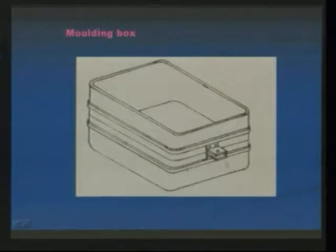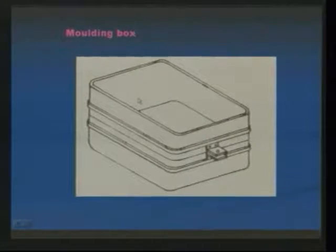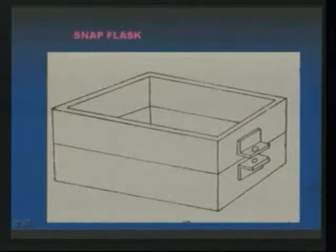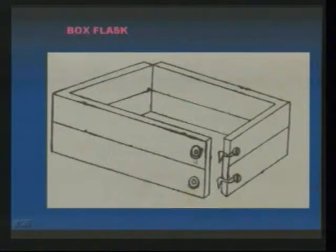This figure shows the molding boxes we are going to use for preparing a mold. In this molding box, different varieties are available as shown in the figures. This one is a snap flask, which consists of both top and bottom flasks differently. And this one is a box flask where one end can be fixed with the help of some rivets and other screws.